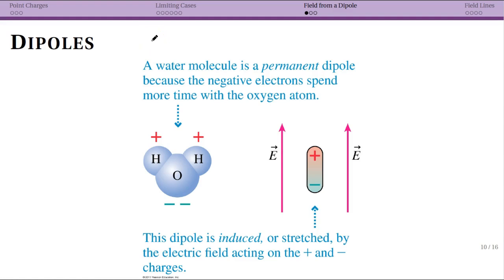We earlier introduced the idea of a dipole, which is simply a positive charge separated from a negative charge. And now we want to actually think about the electric field that a dipole is going to create. Now we might have induced dipoles like this, where it's originally a neutral atom or neutral molecule that's been stretched by an electric field. Or you can have permanent dipoles, such as a water molecule.